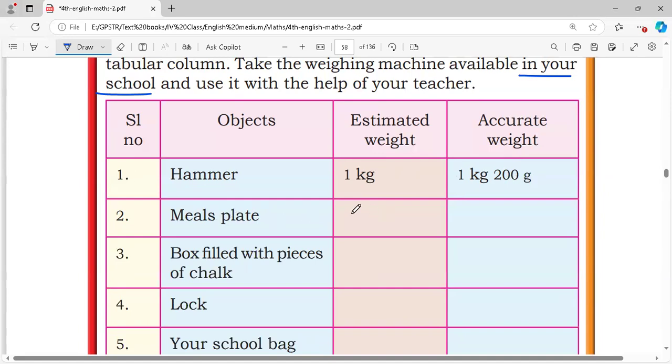Meals plate, estimated 150 grams. Accurate weight is 200 grams.